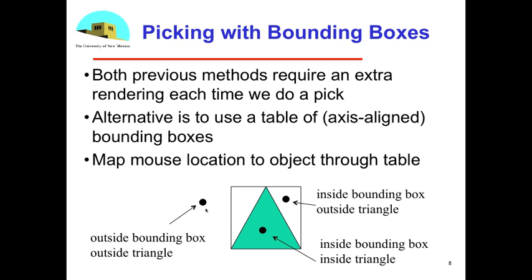But you get little problems of it may not be totally accurate. Here's a point that's both outside the bounding box and outside our object. Our object here is just a simple triangle. And that's easy, so it's outside the bounding box. Therefore, if we return this location, it can't be in this object. Now, if we look at this point, this is what we really want. This guy is inside the bounding box and inside the triangle, so we pick the correct object.